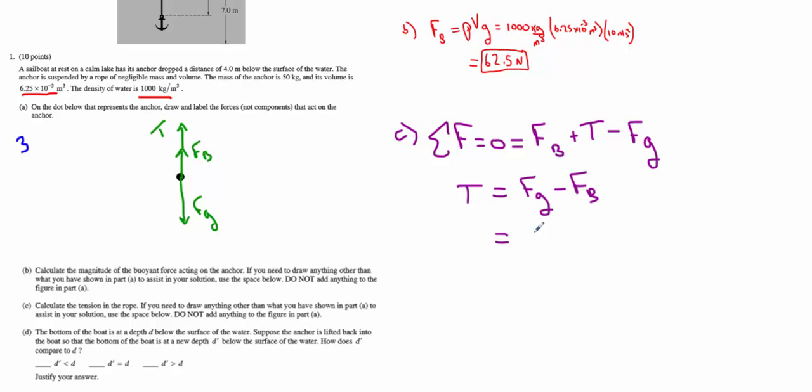The mass is 50 kilograms. g is 10, so we have a weight of 500 Newtons minus the buoyancy calculated in part B, 62.5 Newtons. That gives us 437.5 Newtons. Part C was worth 3 points, and part B was worth 2 points.